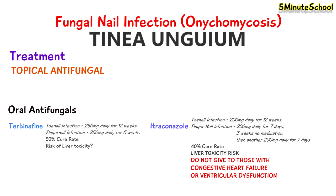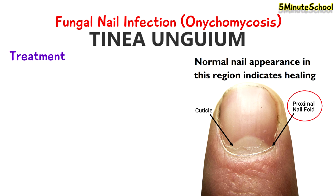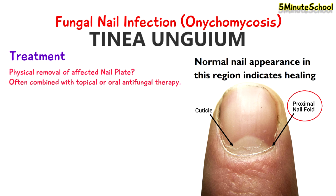In milder cases, ciclopirox olamine, which is a nail lacquer, can be applied to the affected nails for six to 12 months. This lacquer can be used alongside oral antifungal medication to increase their efficacy. The first sign that the medication is working is the appearance of normal nail plate growth from the proximal nail fold region, which can potentially be seen within the first few months. A final treatment option is physical removal of the affected nail plates, which can be combined with oral or topical therapy.